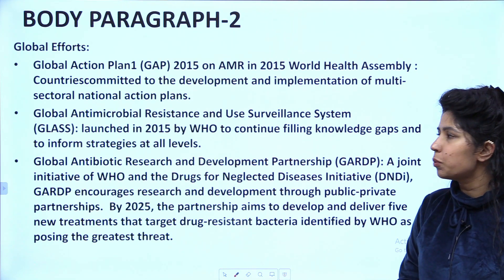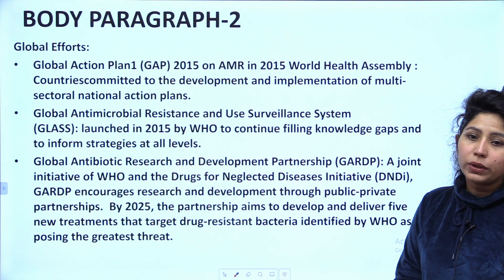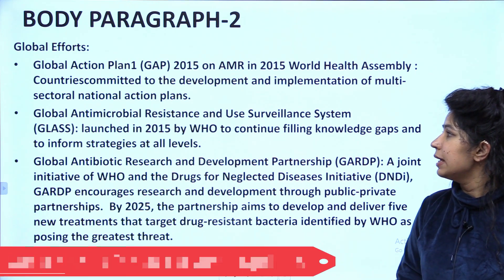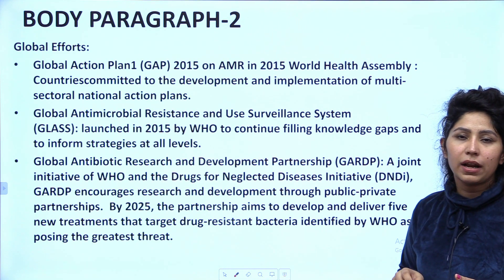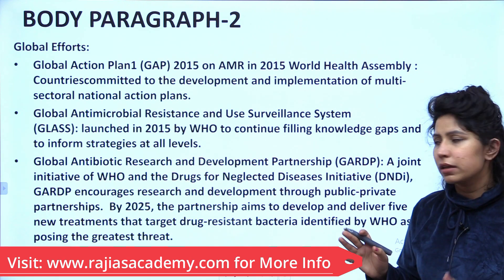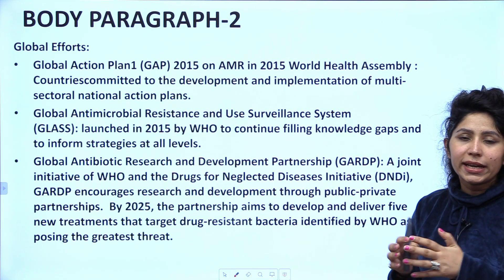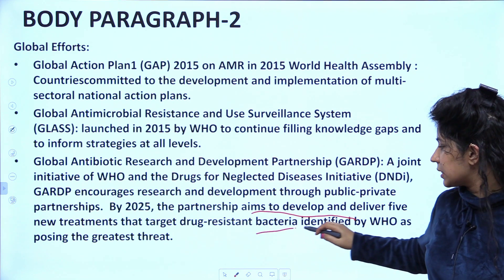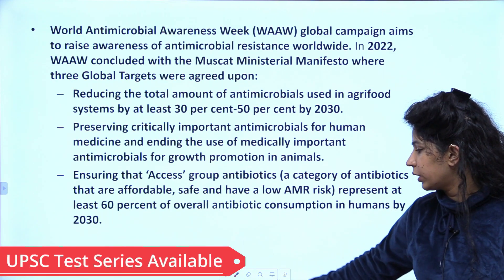First, the Global Action Plan 2015 on Antimicrobial Resistance, agreed at the World Health Assembly of 2015, where countries committed to the development and implementation of multi-sectoral national action plans against antimicrobial resistance. Second, a global surveillance system for antimicrobial resistance monitoring where AMR medicines are used — in food systems, in animals, in which countries and what quantities. Third, the Global Antibiotic Research and Development Partnership, aiming by 2025 to develop and deliver 5 new treatments targeting drug-resistant bacteria identified by WHO as the greatest threats.